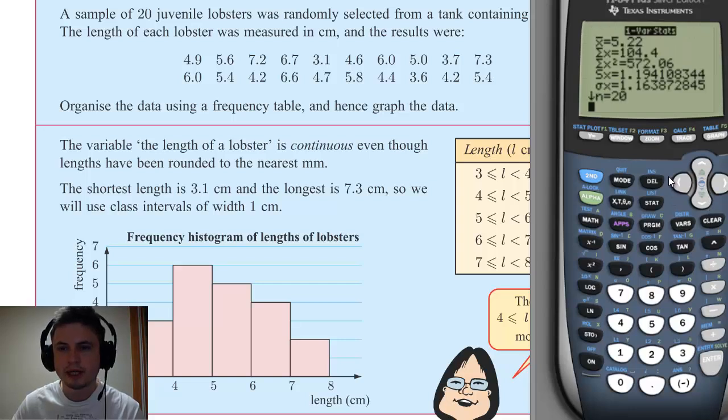It gives you all your answers. Now you have to know some of these symbols. The X with the little bar on top, this is your mean. So your mean for this value, for this particular example, is 5.22. Now we're not actually looking for the mean, but this is basically what it is.